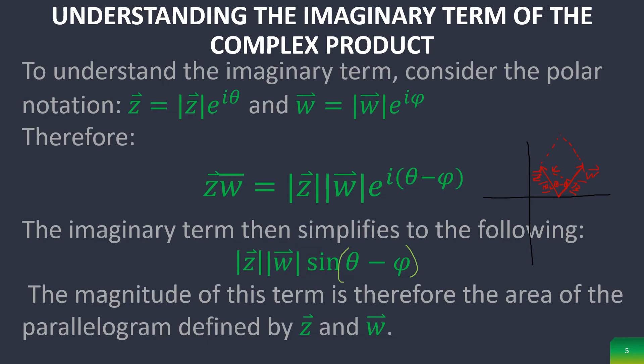And so we end up getting the same result that we have right here, which is that the magnitude of z times the magnitude of w times sine of the angle between the two vectors equals this area. So it's a very nice way to look at what the imaginary term of the complex product is.